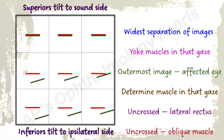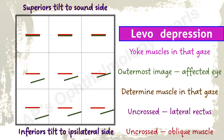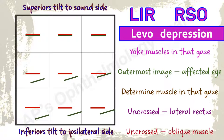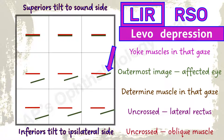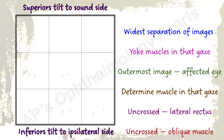Here, maximum separation of images is in levo depression. The yoke muscles acting in levo depression are the left inferior rectus and the right superior oblique. Green is the outermost image, so the left eye is involved — there is a left inferior rectus palsy. This is a crossed diplopia, so the rectus checks out. Tilt is towards the left or ipsilateral side, so inferior checks out.